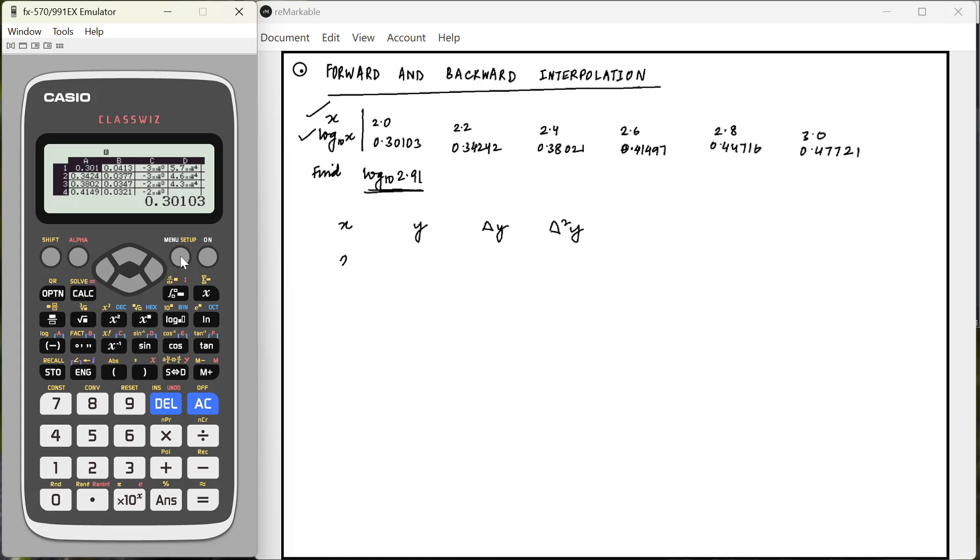So that's going to be 2, 2.2, 2.4, 2.6, 2.8, 3. Now just copy the table as it is. So 0.30103, 0.34242, 0.38021, 0.41497, 0.44716, 0.47721.